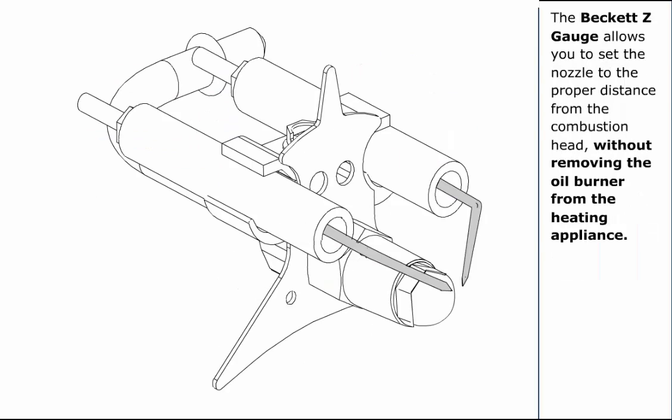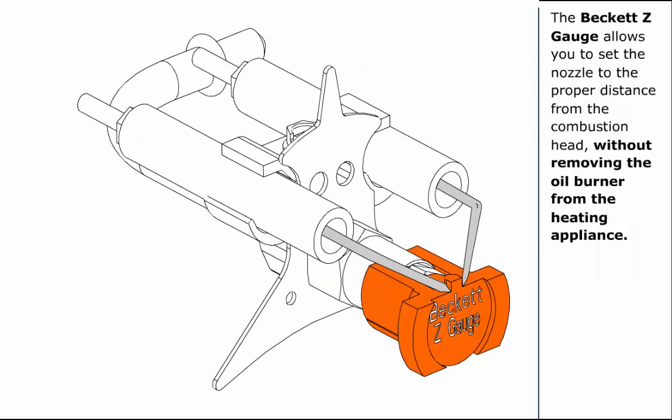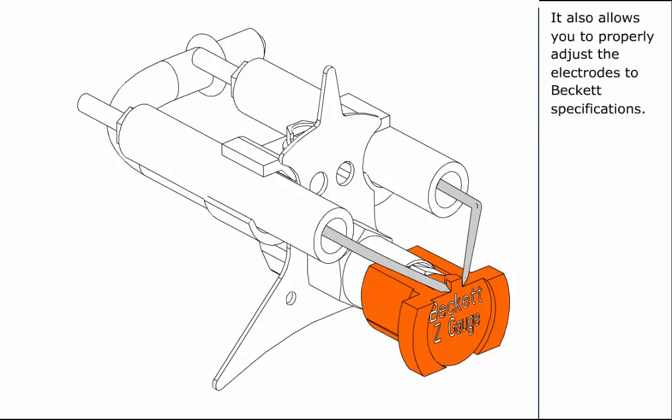The Beckett Z gauge allows you to set the nozzle to the proper distance from the combustion head without removing the oil burner from the heating appliance. It also allows you to properly adjust the electrodes to Beckett specifications.